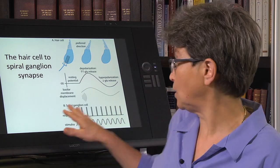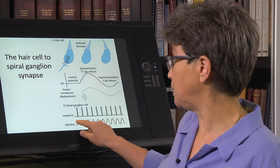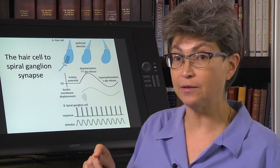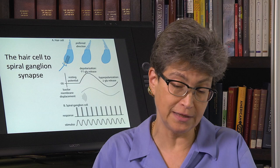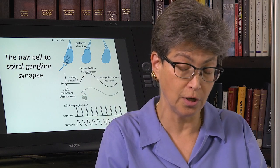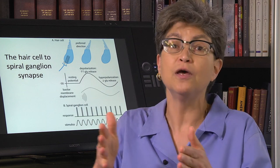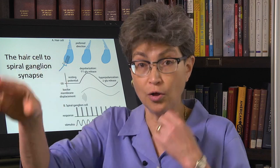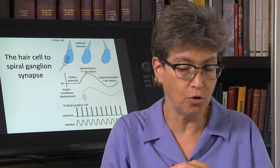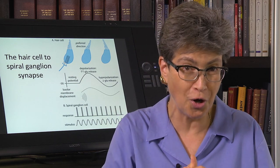From the, once the information has been received by the spiral ganglion cell, then all we have to do is get that all the way through the cochlear nerve, the cochlear portion of the vestibulocochlear nerve, all the way to the brain. And at that point, there are only a couple more things that can go wrong.